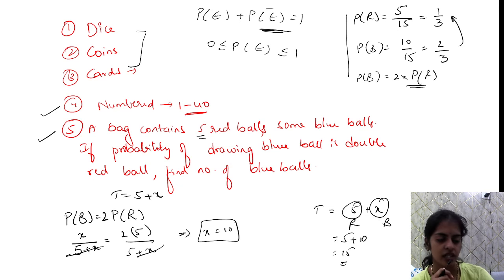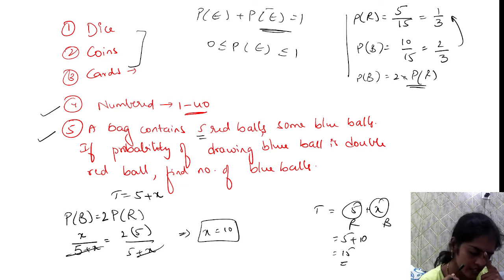Next, the 5th question. I have to answer the question. In a bag, there are 5 red balls and some blue balls. Some means x. So the number of red balls is 5 and the number of blue balls is x. Total balls is 5 plus x.